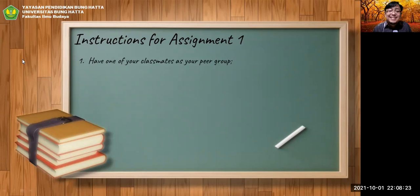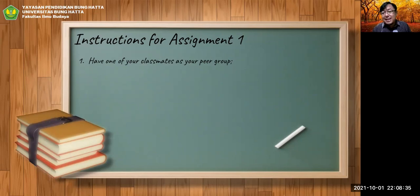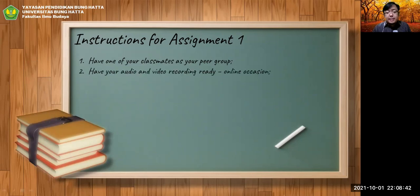Don't fall in love with your partner — cinta lokasi — you just started. Focus on the assignment. Second: have your audio and video recording ready. You can use Zoom — it allows unlimited time with two people and you can record. Google Meet requires a Google account upgrade to record, so I suggest using Zoom. You can share your screen, display the questions, and be creative.